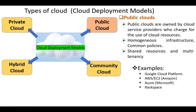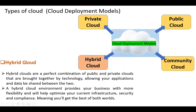A public cloud sells services to anyone on the internet, while a private cloud supplies services to a limited number of people with certain access and permission settings. The next type of cloud is the hybrid cloud. Hybrid clouds are a perfect combination of public and private clouds that are brought together by technology, allowing your applications and data to be shared between the two types. A hybrid cloud environment provides your business with more flexibility, and will help optimize your current infrastructure, security, and compliance — meaning you will get the best of both worlds.